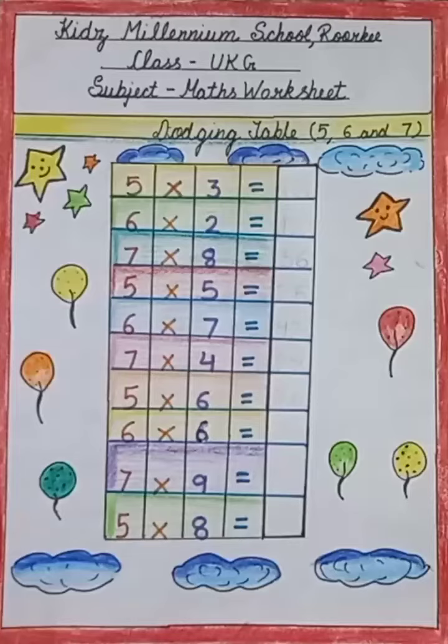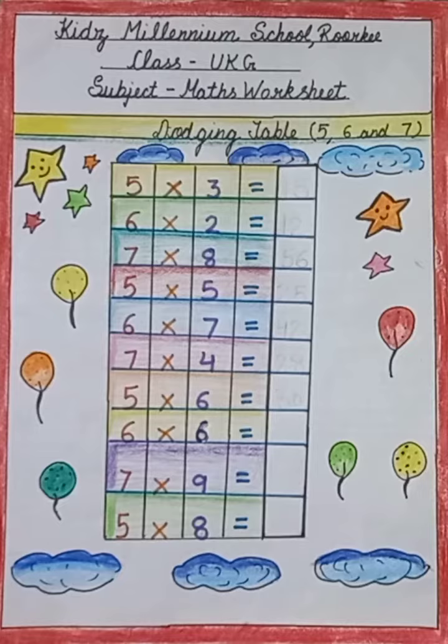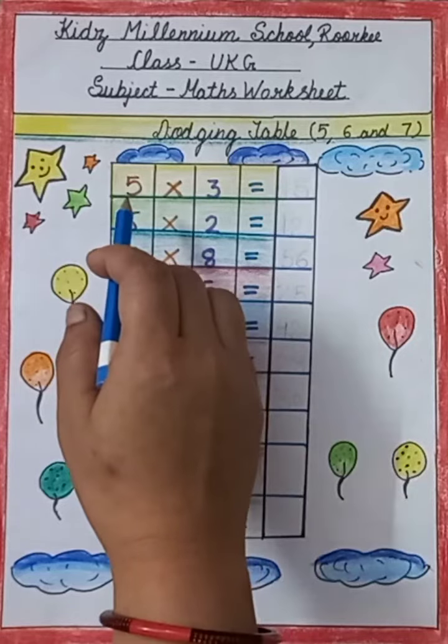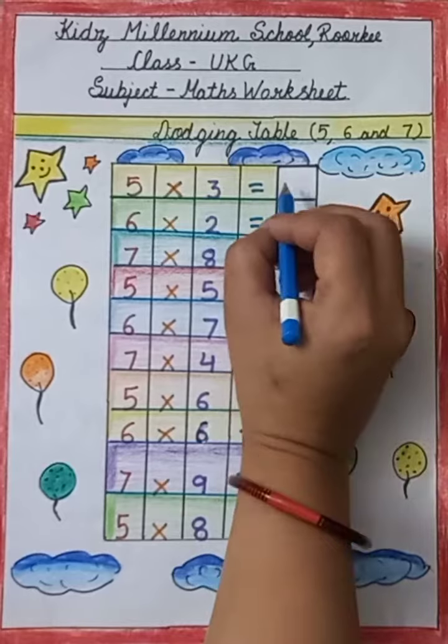Hello my dear kids, I hope you all are fine. Today's next topic is dodging table of 5, 6, and 7. So my dear kids, let's start. This is 5 into 3 equals to 15.